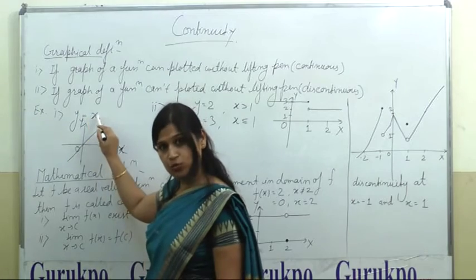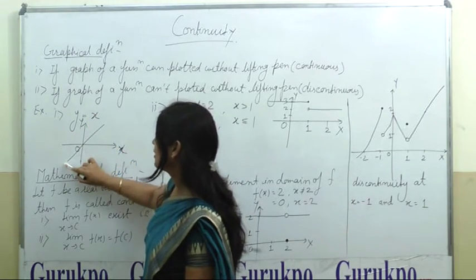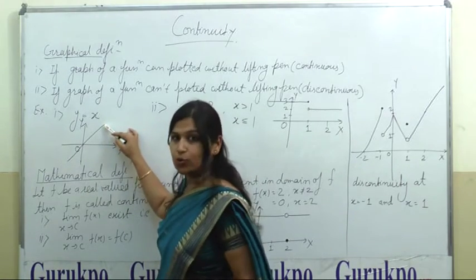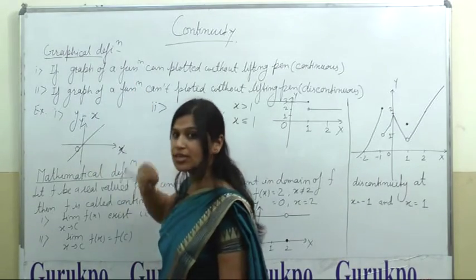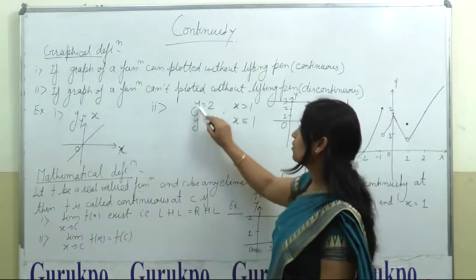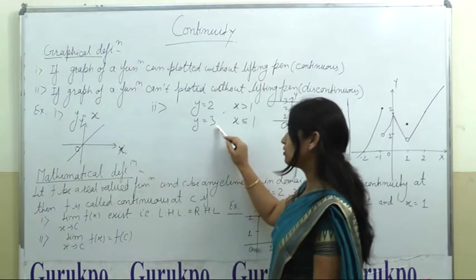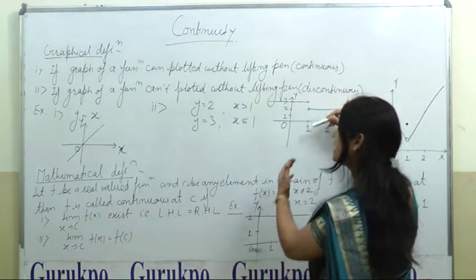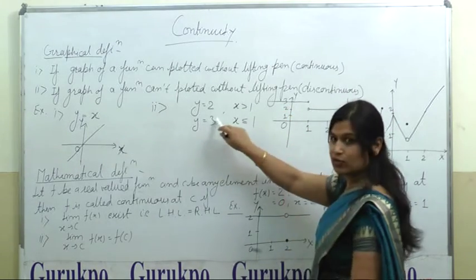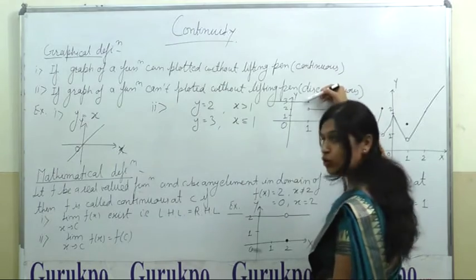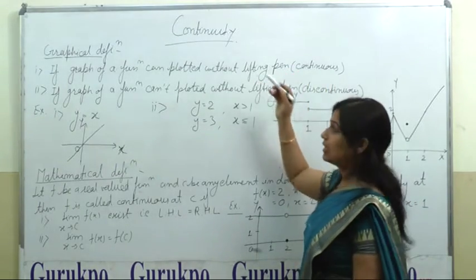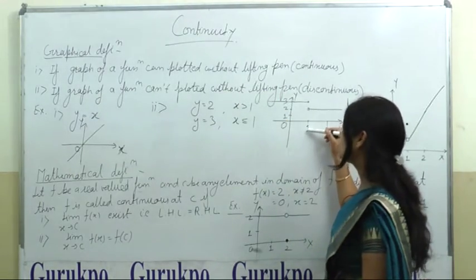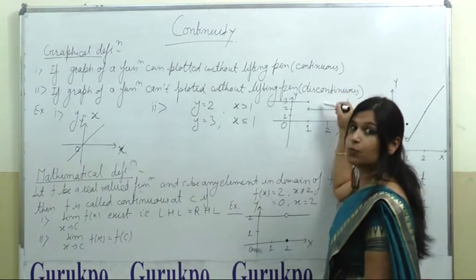For example, let us take the function y equals x. When you draw this graph, you can draw it continuously without lifting your pen, so this graph is a continuous graph. But consider: y equals 2 when x is greater than 1, and y equals 3 when x is less than or equal to 1. When we draw this graph, at x equals 1 your y is 3, and you have to lift your pen. That means this is the second type of graph — it is not a continuous graph. The point x equals 1 where we lift our pen is called the point of discontinuity.